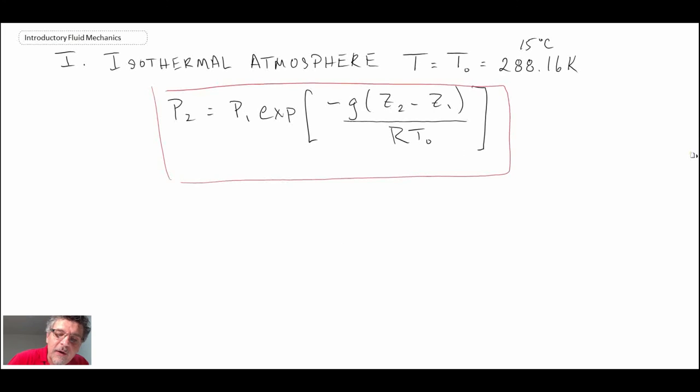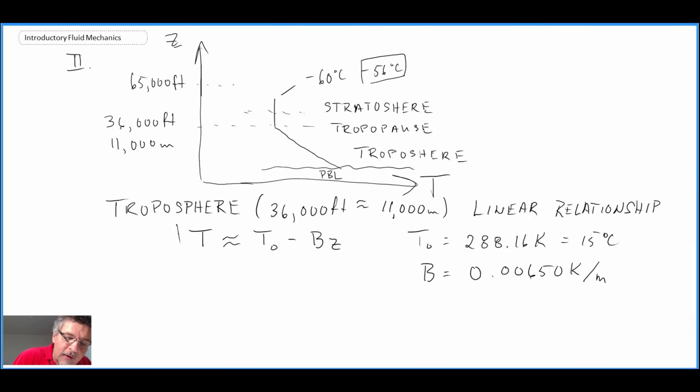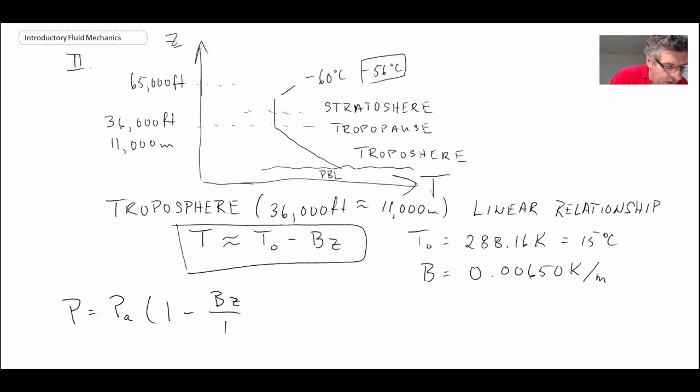And with that, if we go back to our equation, if we go back to this equation here, and we put in that distribution for the temperature for the stratosphere, which is this one here with those constants, what we will find is we get the pressure as being the atmospheric pressure times 1 minus BZ divided by T₀ raised to the power of G divided by the gas constant for air.